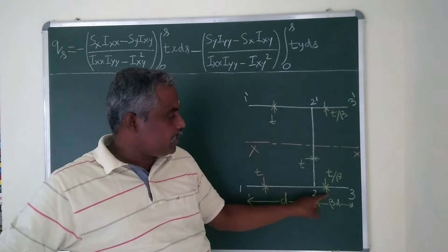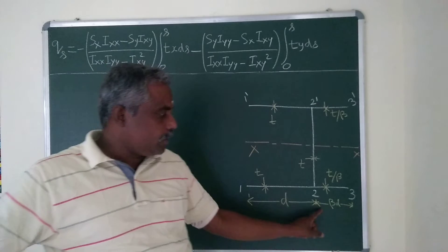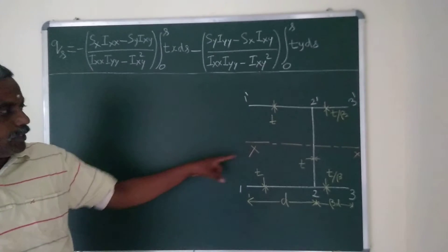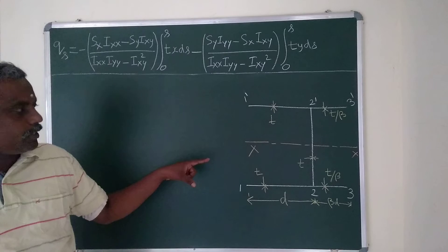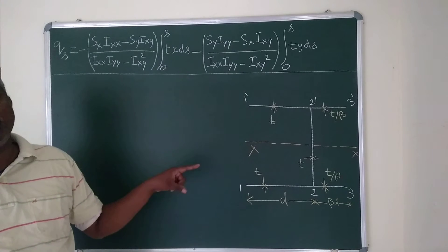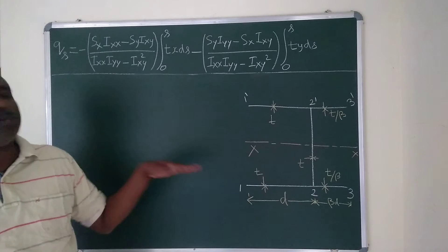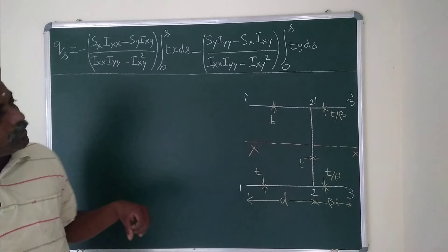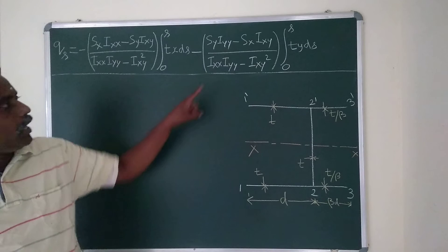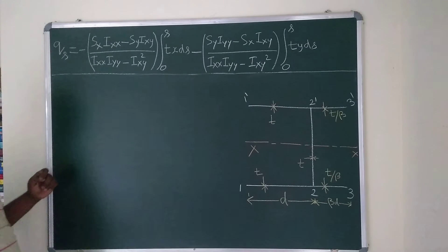Here the thickness is T/beta, and the length is D, with beta D shown. Since the section is symmetric about the X axis, we only need to consider SY to locate the shear center, because the shear center location will lie along the axis of symmetry.